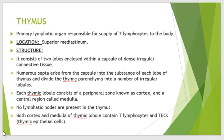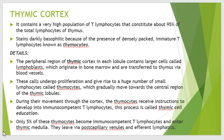Both the cortex and medulla of the thymus contain T lymphocytes and thymic epithelial cells. The thymic cortex contains a very high population of T lymphocytes, constituting about 95% of the total lymphocytes of the thymus. The thymic cortex stains darkly basophilic due to the presence of densely packed immature T lymphocytes known as thymocytes. The peripheral region of the thymic cortex in each lobule contains larger cells called lymphoblasts.